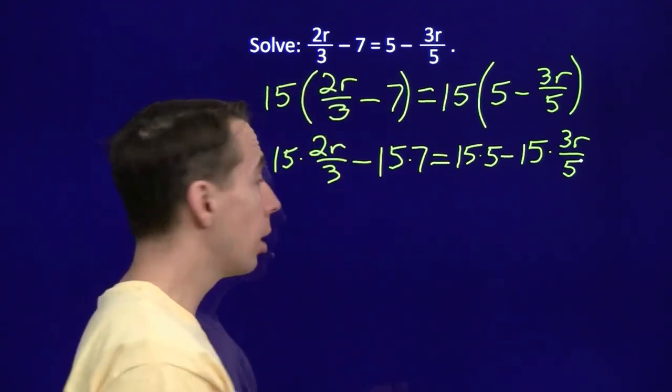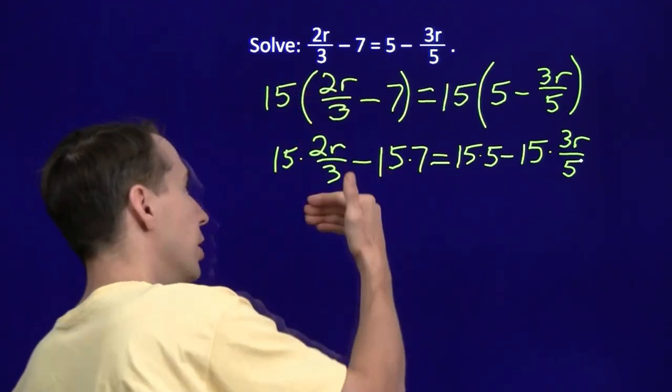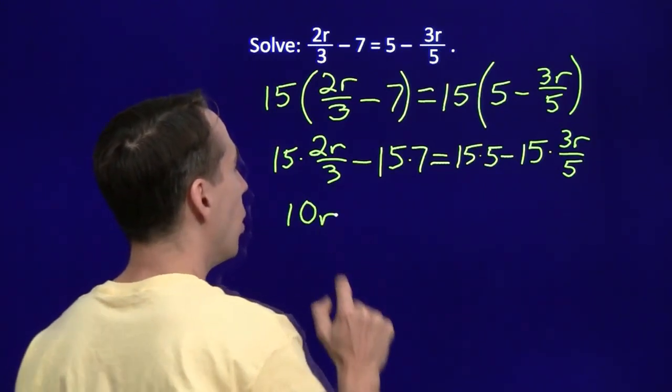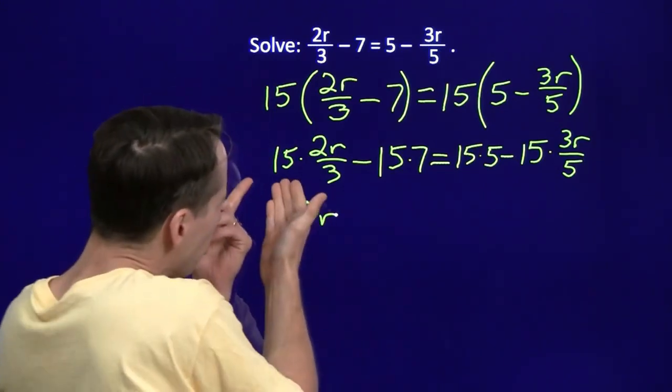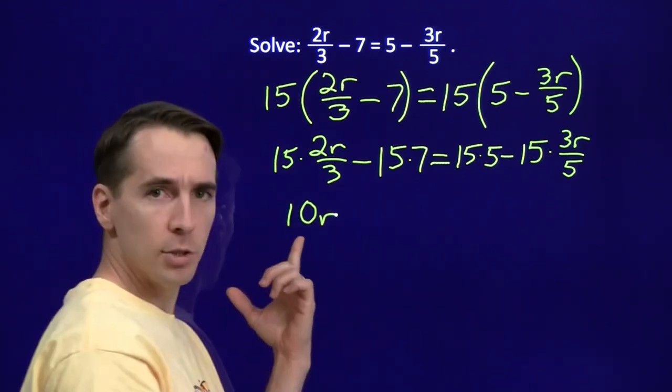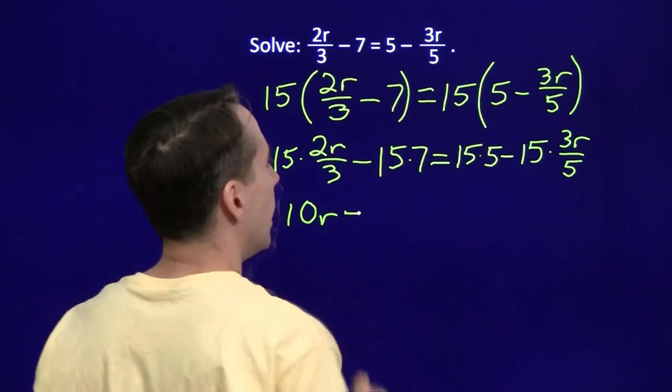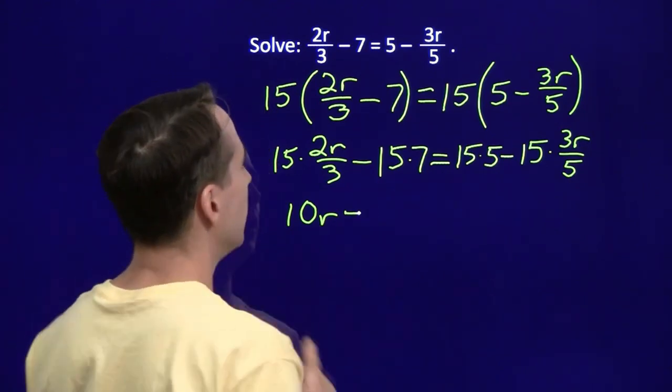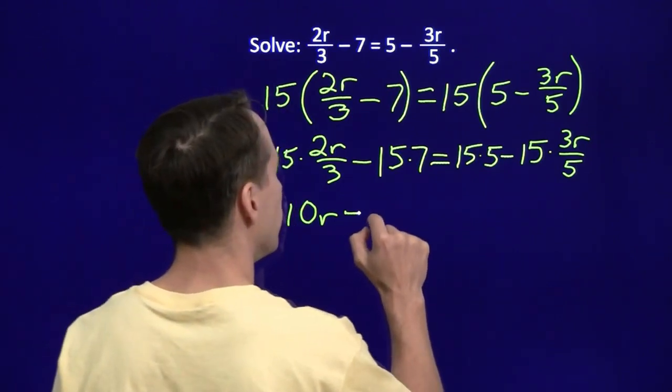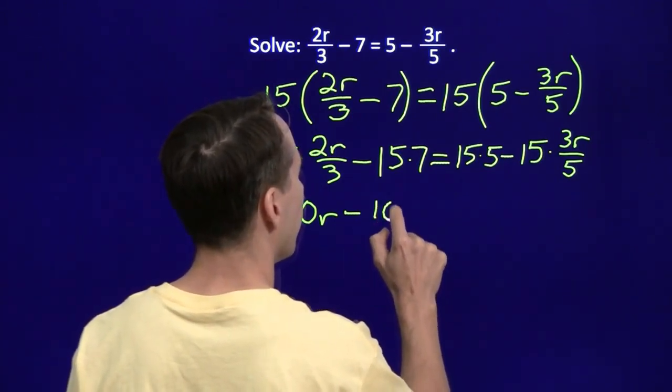And sure enough, 15 times the 2r, that gives us 30r. 30r divided by the 3, that gives us 10r. And we have successfully wiped out that fraction. We also could have thought it is 15 divided by 3 gives us 5, and 5 times 2r gives us 10r. And we have 7 times 15. Well, let's see. 7 times 10 is 70. 7 times 5 is 35. Add those together, and we get 105.